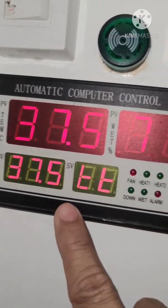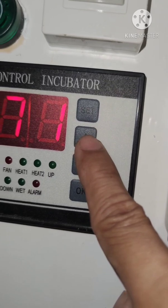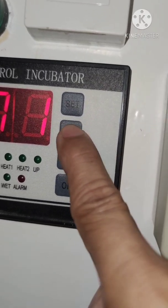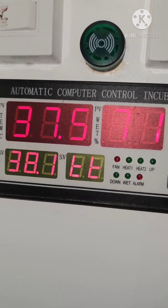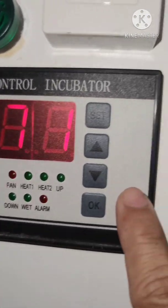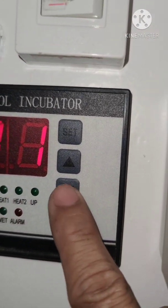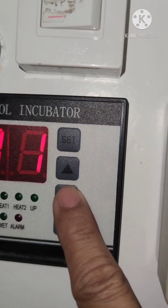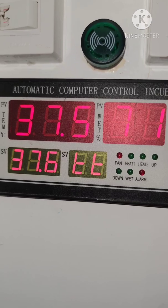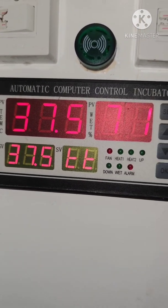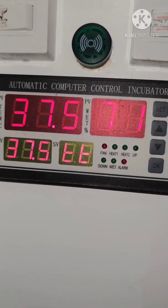So if you want to increase it, you press the up button. So it's increasing. Now if you want to decrease the value, you press the down button. And then set it to your desired temperature for your incubator.